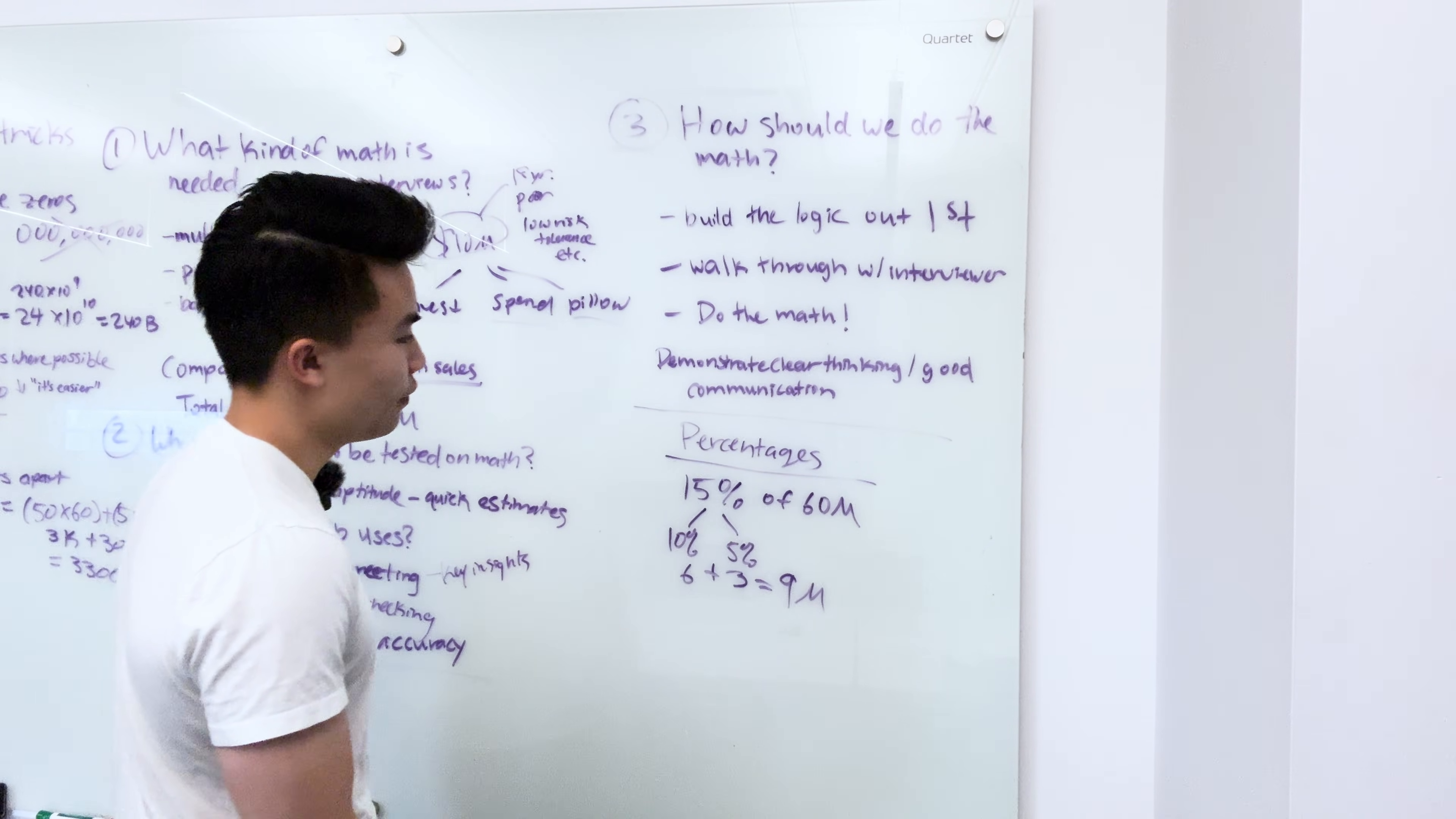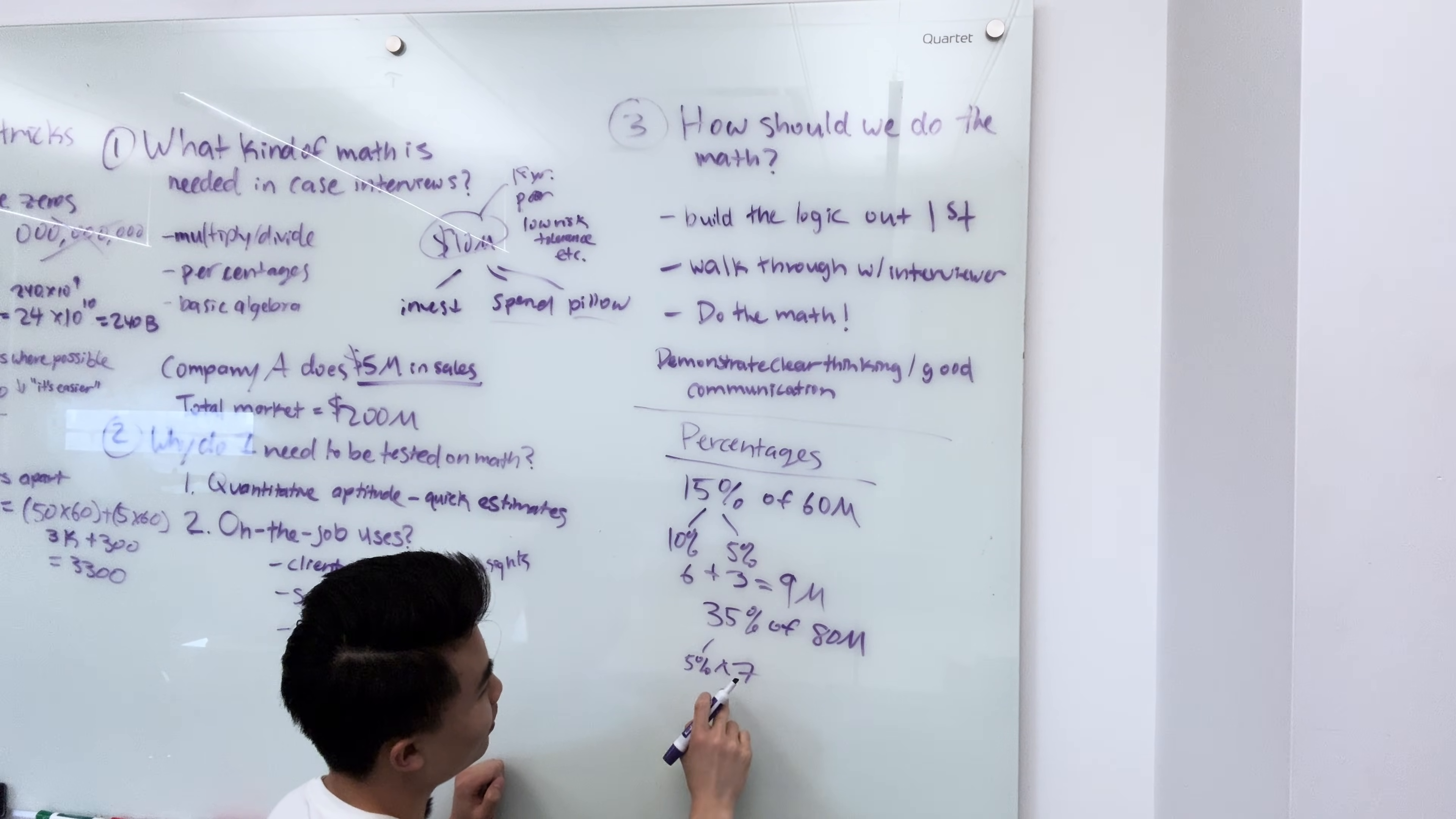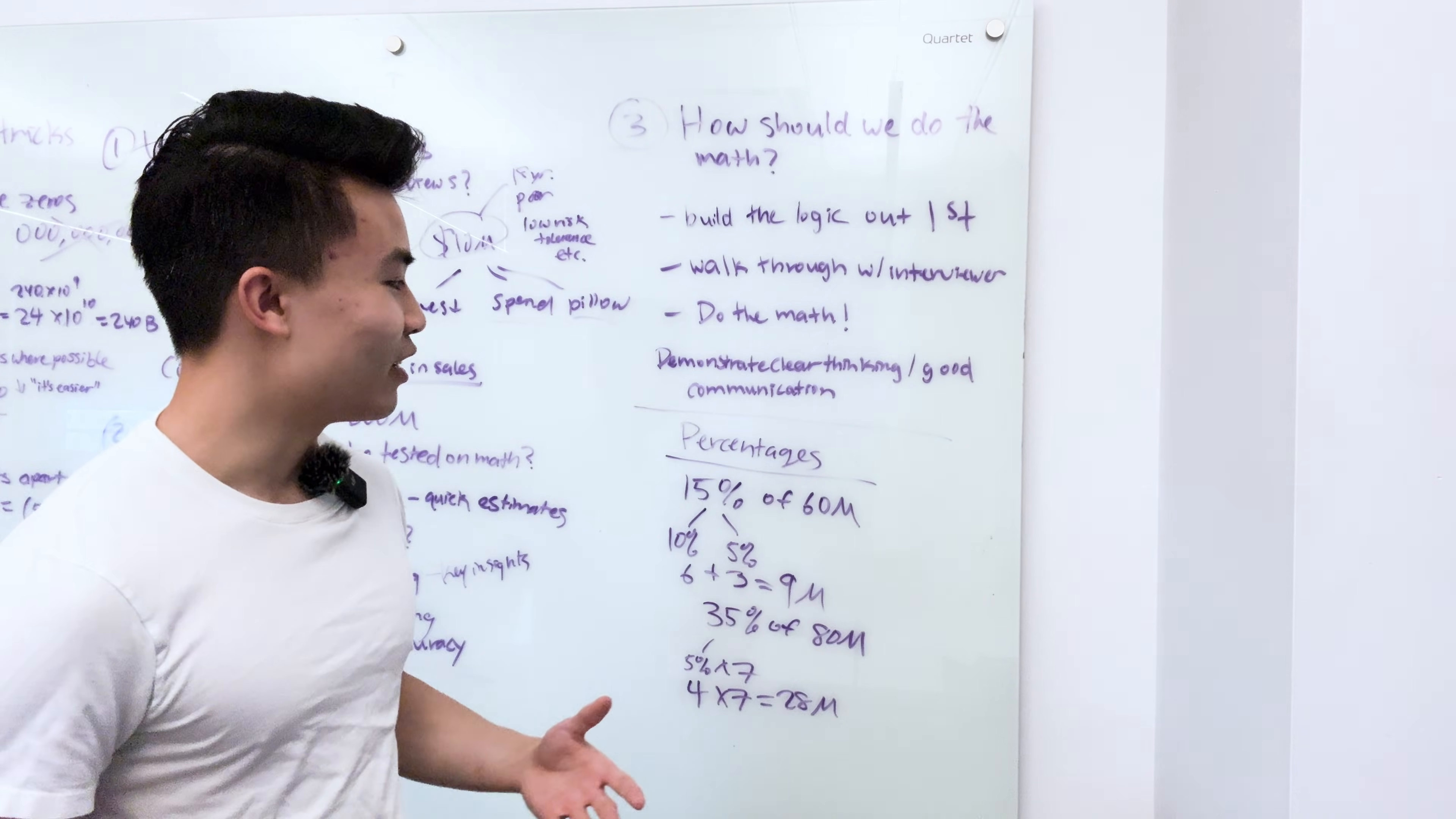Now another way that this can work is if say for example, you need to do 35% of 80 million, right? Now in this case, it's not as simple as breaking it into just 10% and 5%. But what we can remember is that 35%, that's basically 5% times 7, right? And so if we can just get 5% of 80 million and then multiply that number by 7, then we can also get to the result. And 5% is half of 10%. And so 10% of 80 is 8 divided by 2, that's 4. And so we know this is 4 times 7 gets us 28. And don't forget again to add the million. So we know that 35% of 80 million is 28 million. So again, always be looking for opportunities to break apart the percentages because it's going to make your life so much easier when it comes to calculating X percent of some giant number.